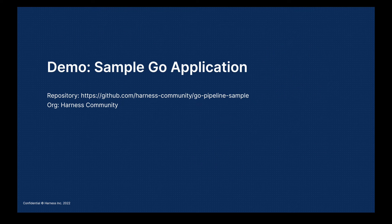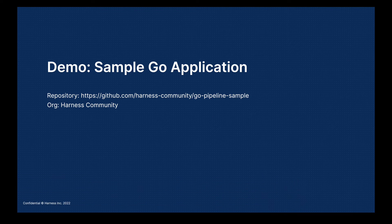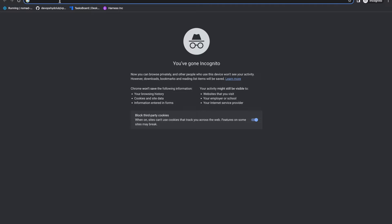So let's get started. As part of the first step, we are going to fork the repository — the Go pipeline sample — which is present under the Harness community. The link to the repository will be provided in the description box. I'll directly jump into the Harness UI and create a new account to get started with building your first pipeline for the Go application.